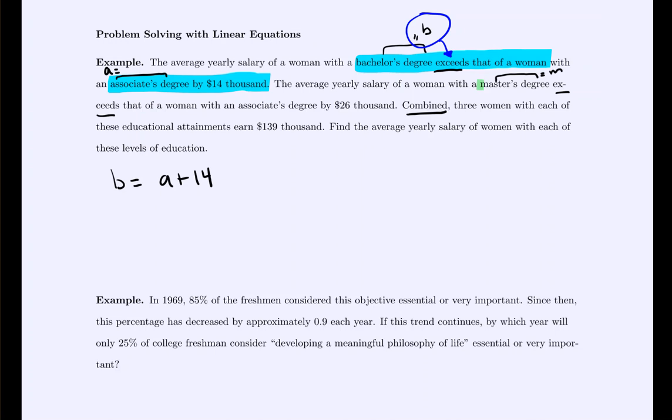Similarly, can you translate our next statement that I'm highlighting into an equation? The master's degree, when compared to the associate's degree, the master's degree exceeds it by $26,000. Write that down. So the master's degree is equal to the associate's degree plus $26,000. So we're just working our way through the problem, translating each statement. Next comes up that combined, they earned this much. Combined makes us think of all added together.